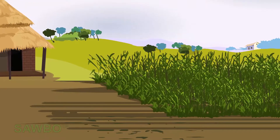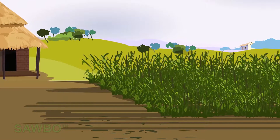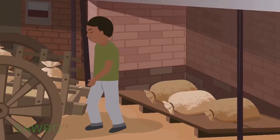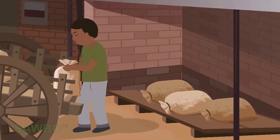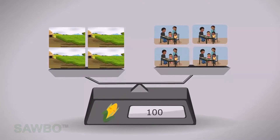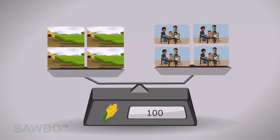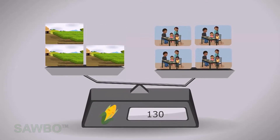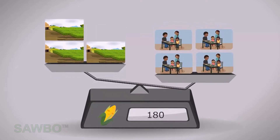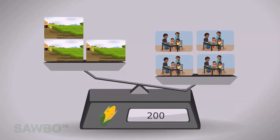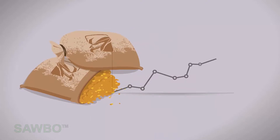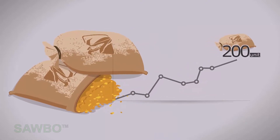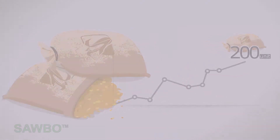A new growing season of maize arrives, and it doesn't rain much, so the maize harvest is poor. Maize consumption continues steadily, but there was not enough maize harvested to meet the demand. The maize price increases to 200 units per bag.